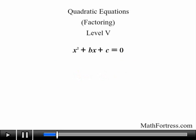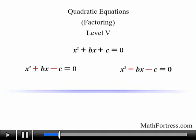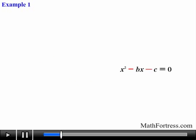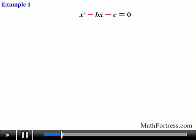In this video we will go over the case when b is positive and c is negative, and the case when b is negative and c is negative. Lastly we will go over an example where the quadratic trinomial is not factorable over the integers. Let's go ahead and go over an example where the coefficient b is negative and the coefficient c is negative.